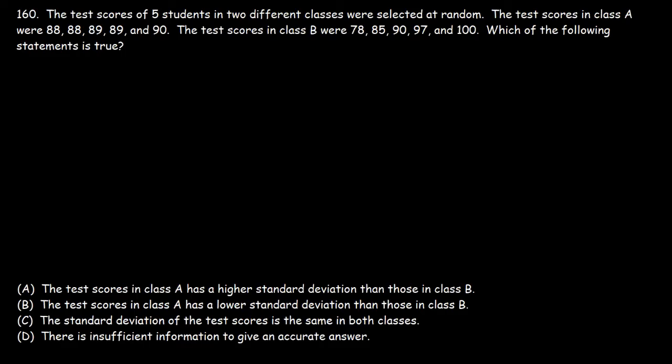Number 160. The test scores of 5 students in 2 different classes were selected at random. The test scores in Class A were 88, 88, 89, 89, and 90. The test scores in Class B were 78, 85, 90, 97, and 100. Which of the following statements is true?